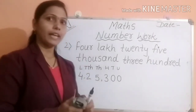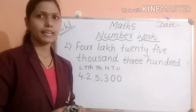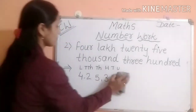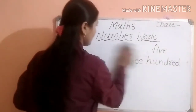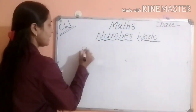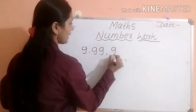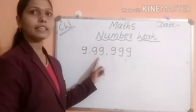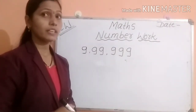If we know which is the biggest six-digit number, then we will find the smallest seven-digit number. Nine lakh, ninety-nine thousand, nine hundred ninety-nine is the biggest six-digit number.